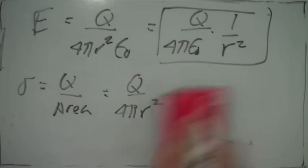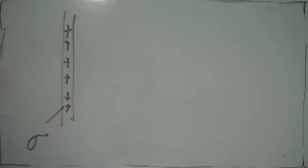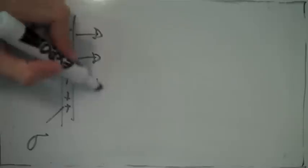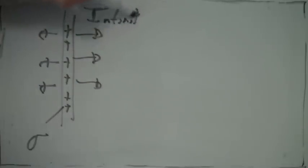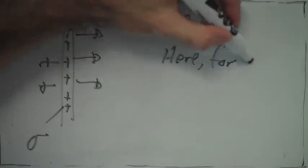Let's consider this situation. If we have an infinite plane with surface charge density sigma, the electric field points away from the plane in both directions. For an infinite plane, this is how the electric field looks.